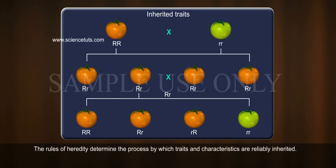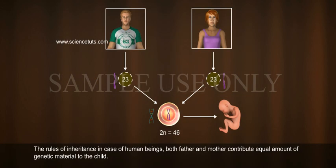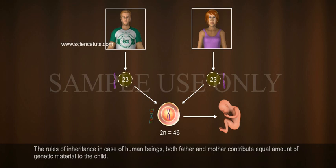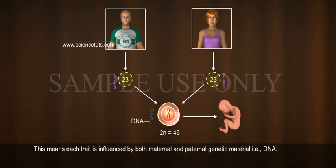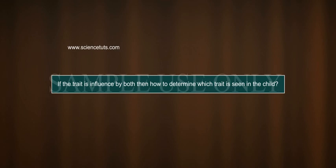The rules of heredity determine the process by which traits and characteristics are reliably inherited. In the case of human beings, both father and mother contribute equal amounts of genetic material to the child. This means each trait is influenced by both maternal and paternal genetic material, i.e. DNA. If the trait is influenced by both, then how do we determine which trait is seen in the child?